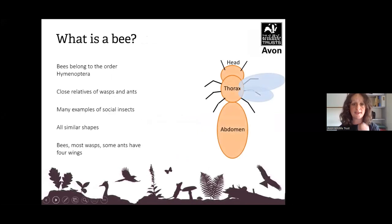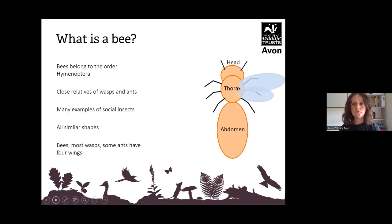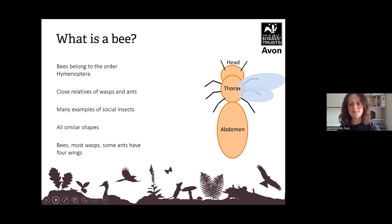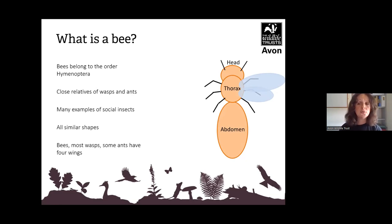What is a bee, you may ask? These belong to the order Hymenoptera, which involves insects like sawflies, social wasps, parasitoid wasps and ants. They all have a particular structure — they have a head, a thorax and an abdomen. Through my placement I've learned a lot about bees, and that's what we're going to be learning about tonight.